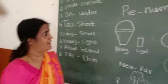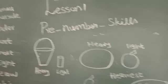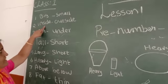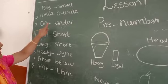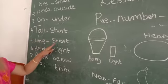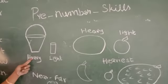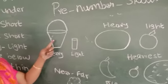Hi children, welcome to Module 3. Last lesson we learned big, small, inside, outside, on, under, tall, short, long, short. Now in this module we are going to learn heavy and light.